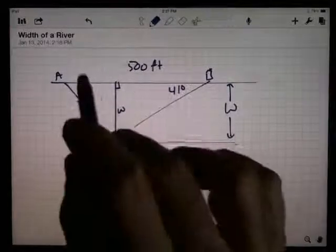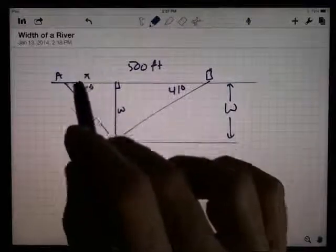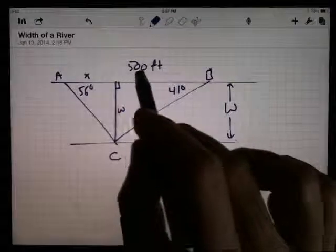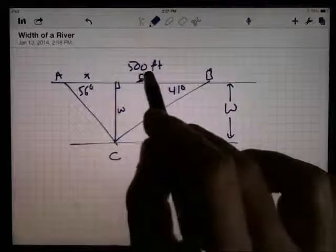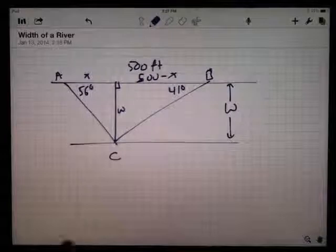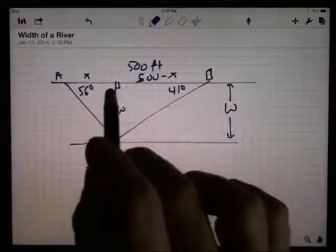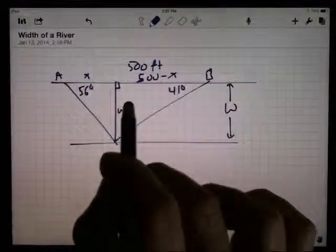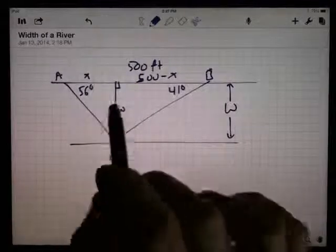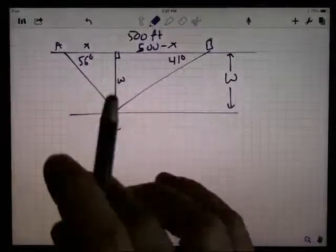What it does is it cuts this 500 feet into two pieces. I don't know how long each piece is, so I'm going to call one of the pieces X, and I know that the other piece is going to be 500 minus X. By dropping that perpendicular, I've got two right triangles here with two known angles. Problem is, I've got some unknown stuff. Let's see what we can get here.